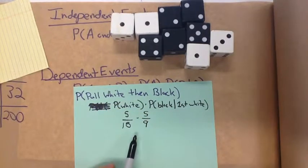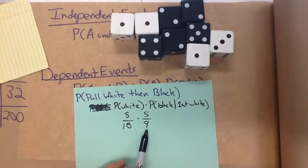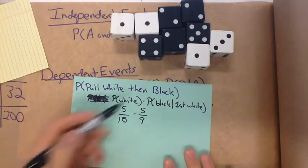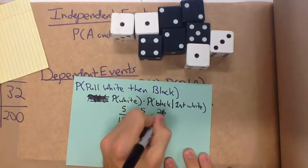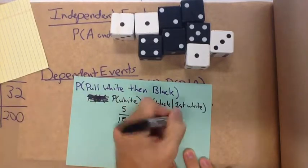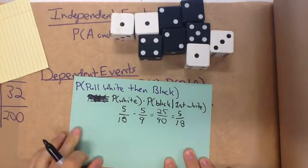So because that first event occurred and it's dependent, I now have nine left over. I get 25 over 90, which becomes 5 over 18.